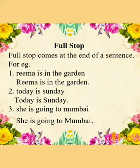At the end, again, a full stop. Number three: 'She is going to Mumbai.' Here, 'She' starts with a capital letter. 'Mumbai' is a special name of a place, so it will also start with a capital letter. And at the end, again, a full stop. So here we can see how to use capital letters and full stop while writing a sentence.